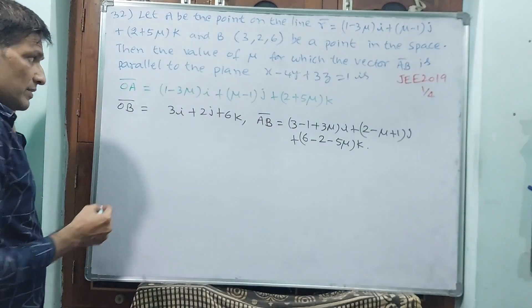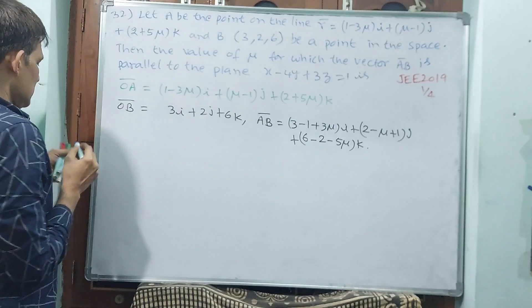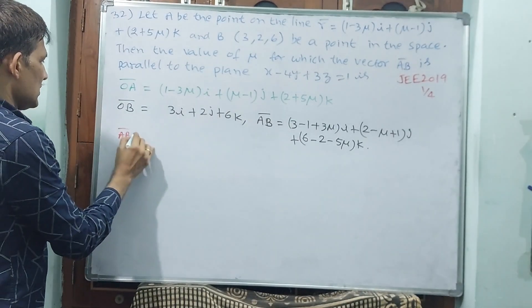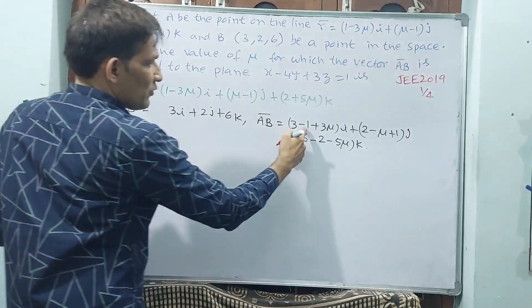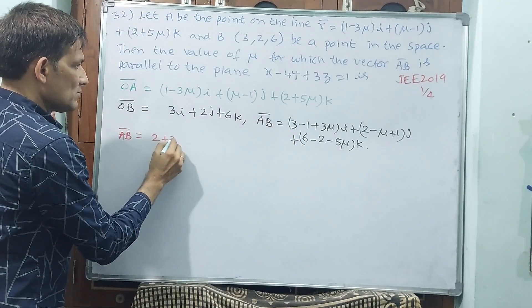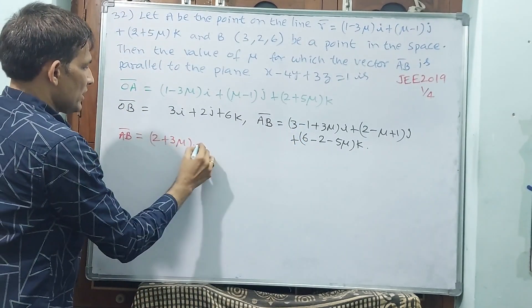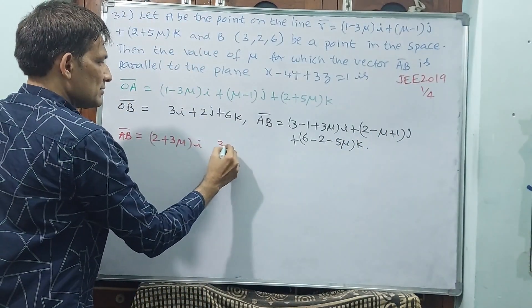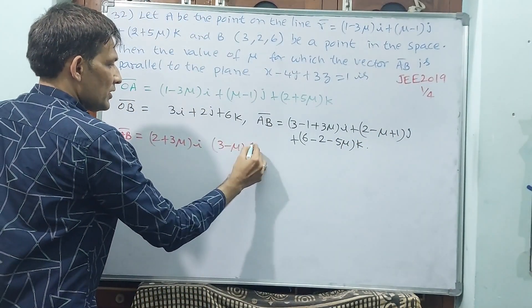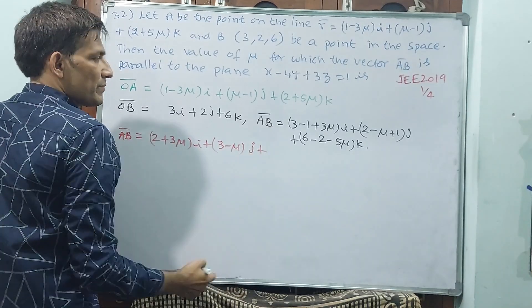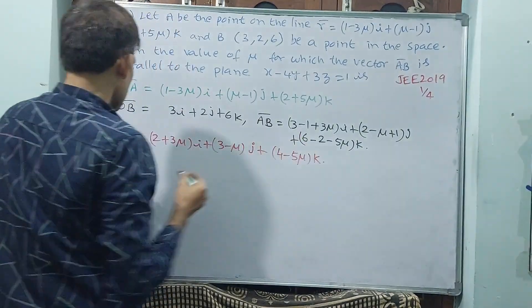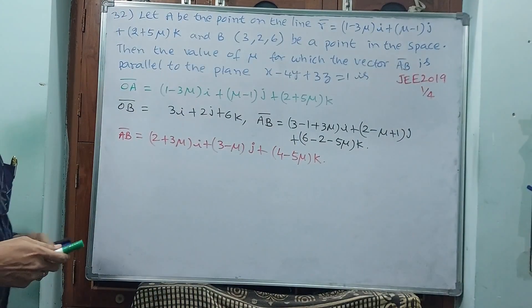Vector AB is (2 plus 3μ)i plus (3 minus μ)j plus (4 minus 5μ)k. Okay, now this is a vector AB.